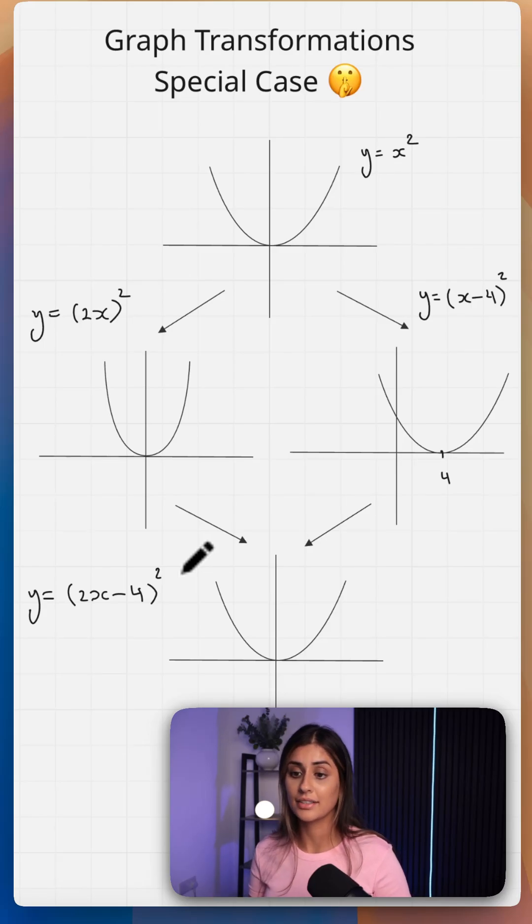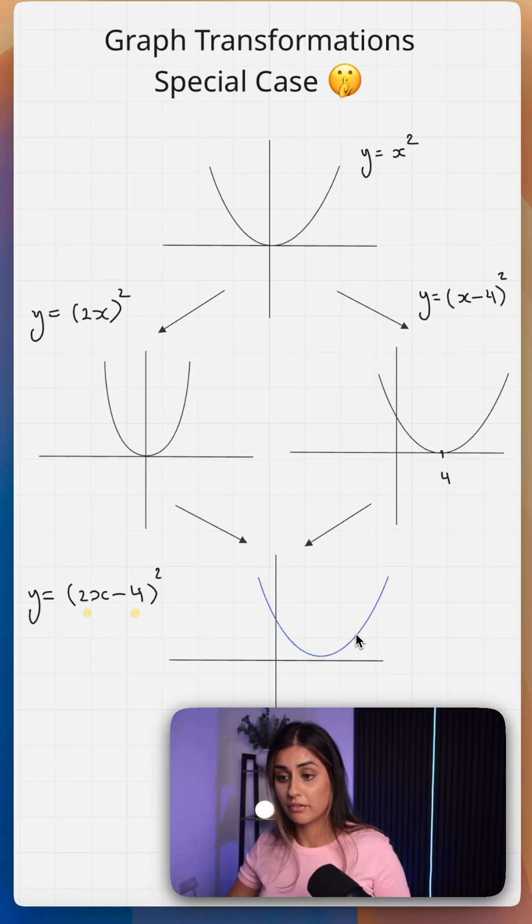but this is that special case. We actually deal with the subtraction, the minus 4 first, and we squash everything by 2. So your graph is going 4 units to the right first, then we are multiplying everything by a half. So this point here is now 2.